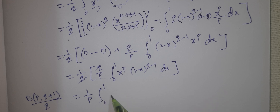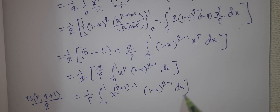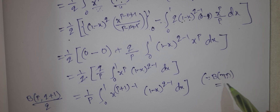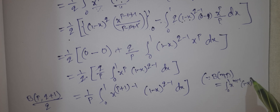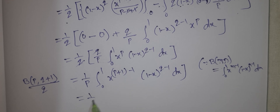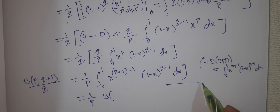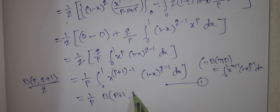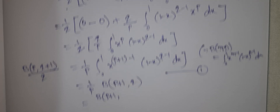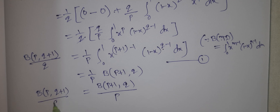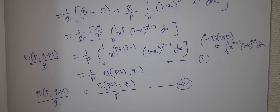The integral from 0 to 1 of x to the power of p plus 1 minus 1 times 1 minus x to the power of q minus 1 dx — by the beta definition — gives 1 by p times beta of p plus 1, q. So beta of p, q plus 1 by q equals beta of p plus 1, q by p. This is equation number 2.